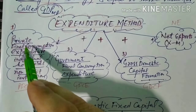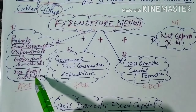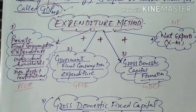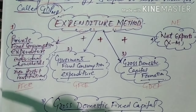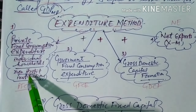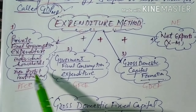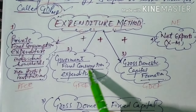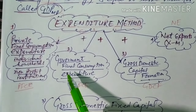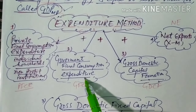The first component of the expenditure method is private final consumption expenditure — the expenditure by individual households and non-profit private institutions on durable goods, non-durable goods, and semi-durable goods. The second component is government final consumption expenditure — what the government spends on defense, hospitals, education, etc.